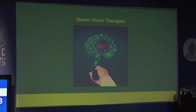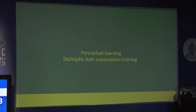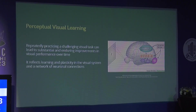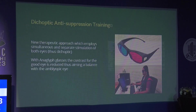New technologies and newer vision therapies are based on two learning concepts: perceptual learning and dichoptic anti-suppression training. Perceptual visual learning involves repeatedly practicing a challenging visual task, leading to substantial and enduring improvements in visual performance over time — reflecting plasticity in the visual system and a network of neuronal connections. Dichoptic anti-suppression training involves simultaneous and separate stimulation of both eyes — done with anaglyph glasses — where the contrast of the good eye is reduced to match the amblyopic eye.